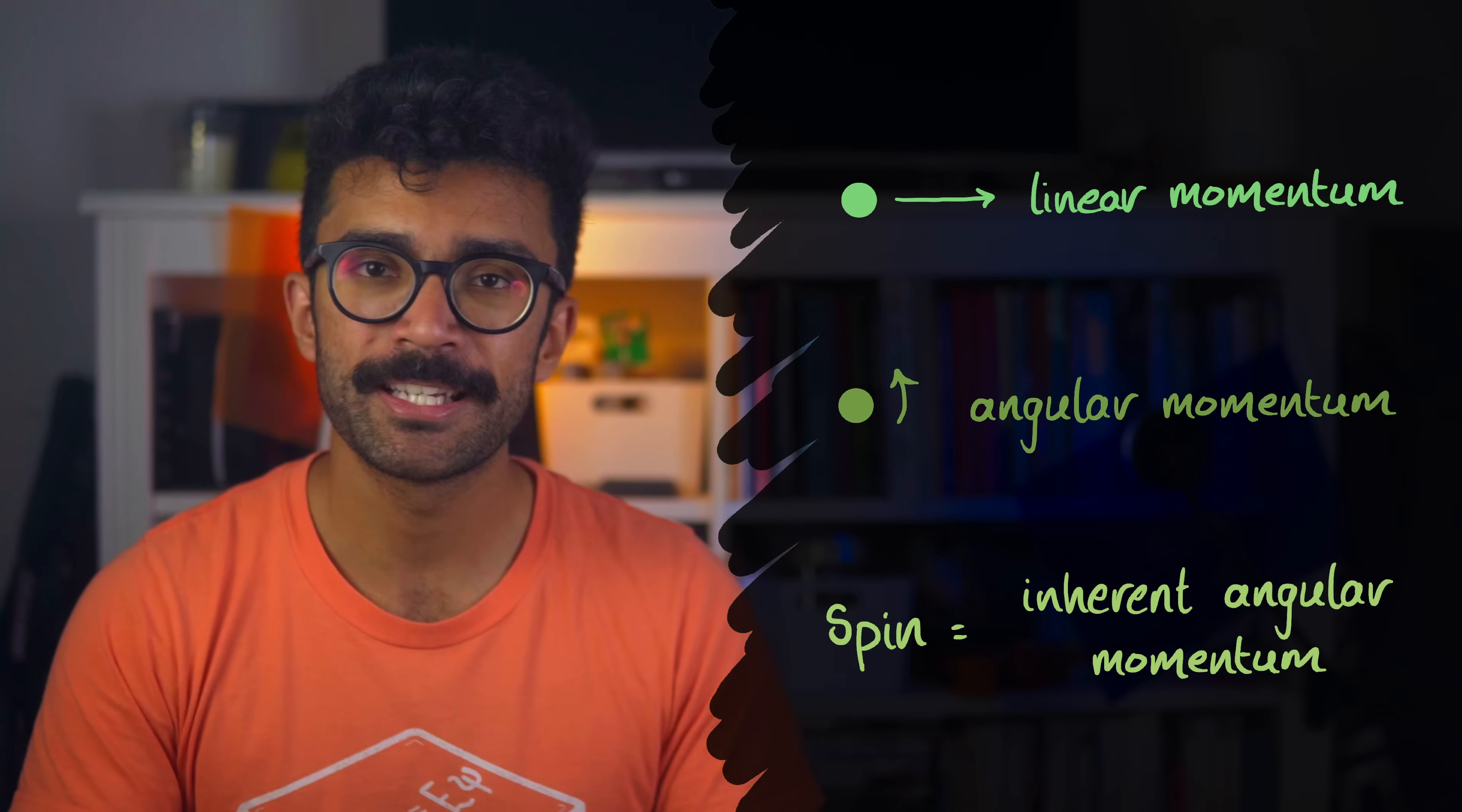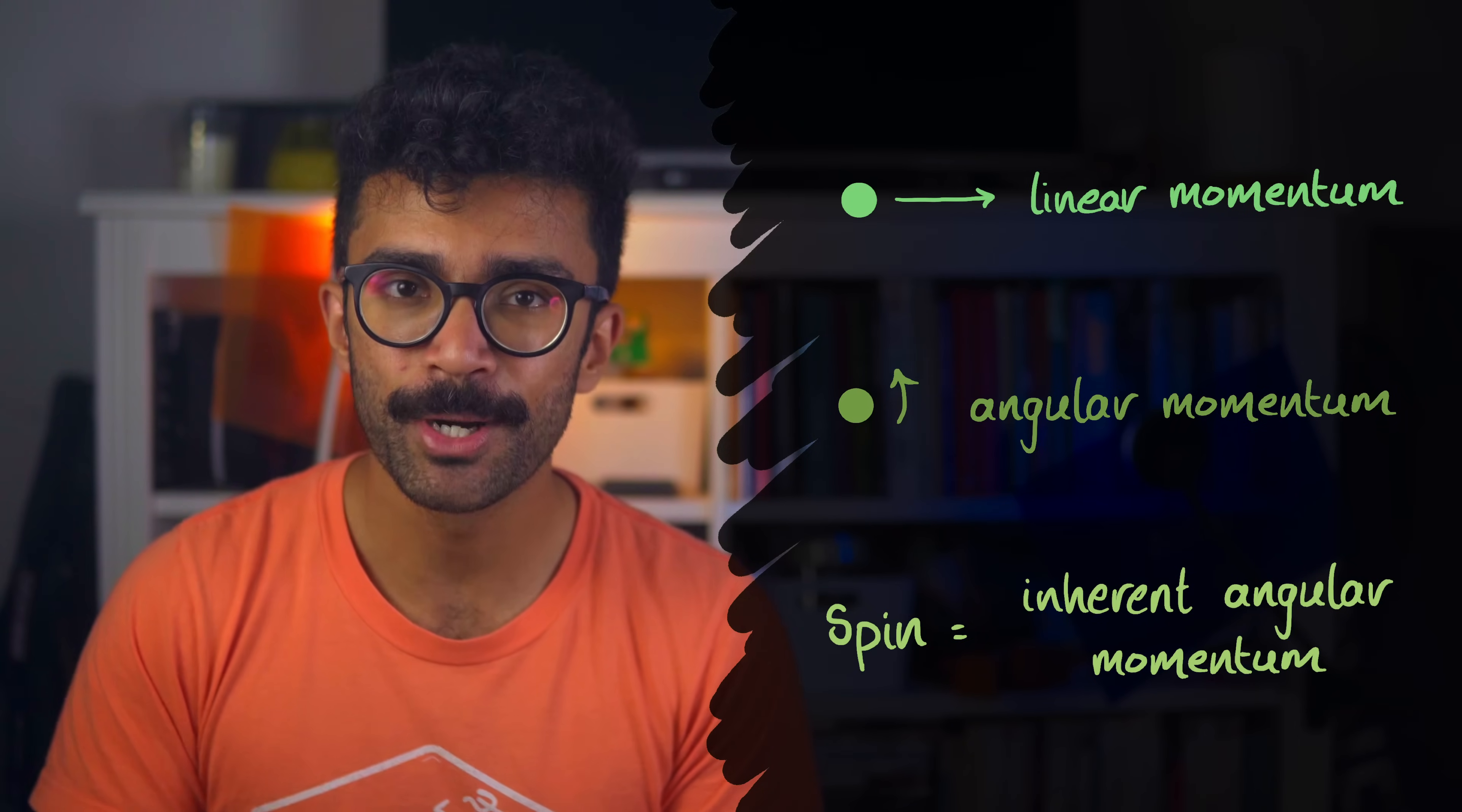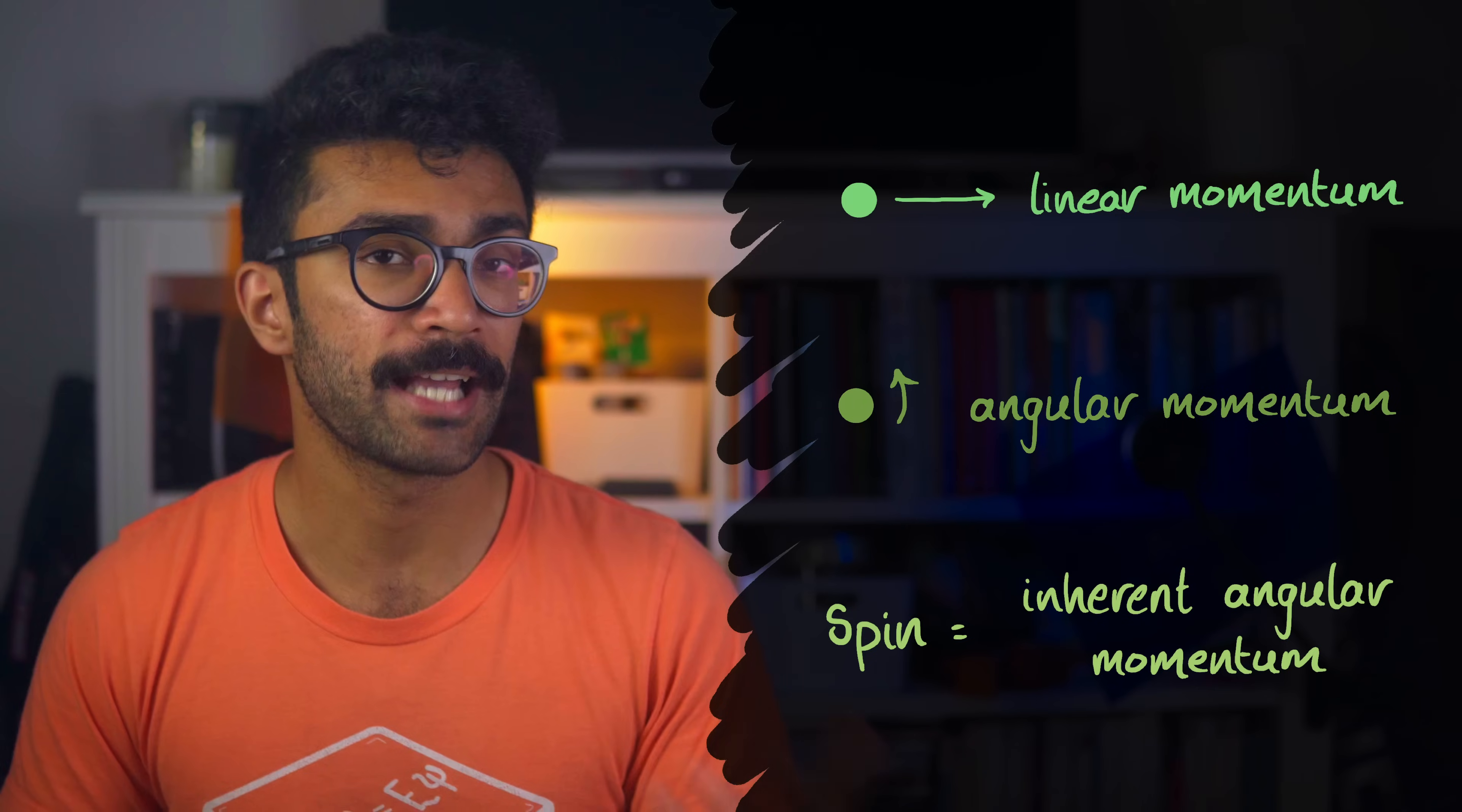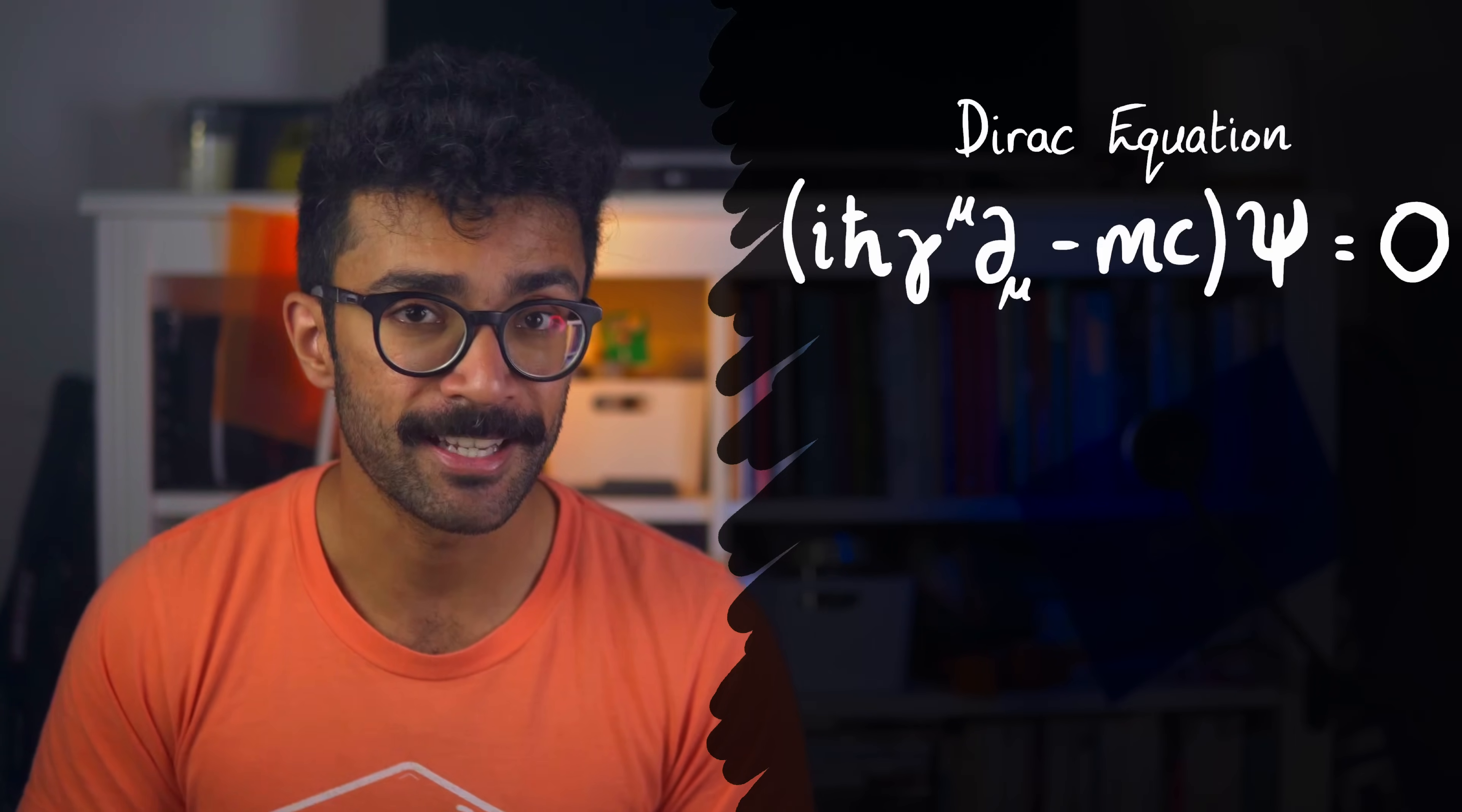For more information about spin, check out this video, which is again also linked in the description. So the Klein-Gordon equation doesn't account for spin. Or more accurately, it only really works for particles that have zero spin. In order to account for spin, we need to look at another equation that is also ideally quantum mechanical and special relativistic in nature.